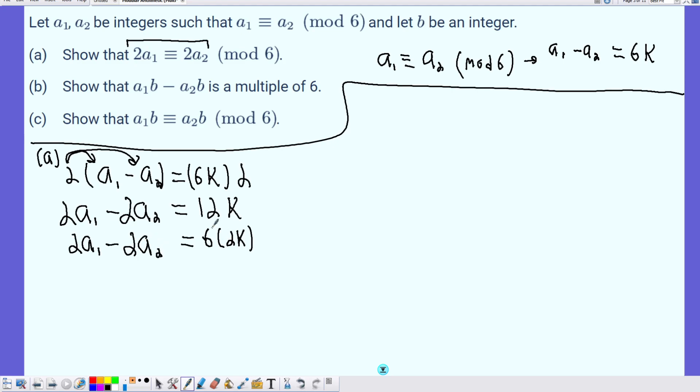And since this is an integer multiplied by 6, then what we have is that the difference of 2 times A1 minus 2 times A2 is a multiple of 6. And that shows by definition of modulo congruence, that if the difference is a multiple of 6, then 2A1 must be congruent to 2 times A2 mod 6. And that solves part A for us.